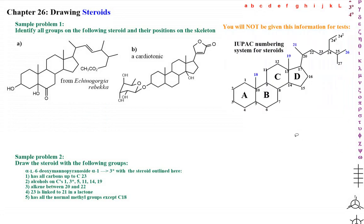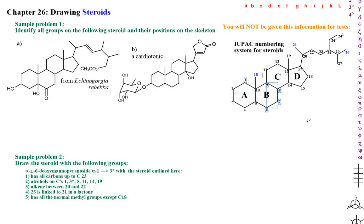Steroids have the ABCD ring system. You should be able to draw it — it's rather simple. You draw a six-membered ring fused to another six-membered ring right beside each other. You fuse a third six-membered ring going up to the right, and then straight to the right off of that, you fuse ring D, which is a five-membered ring.